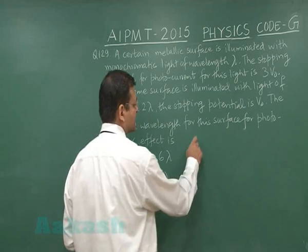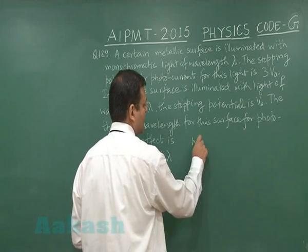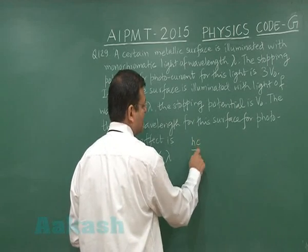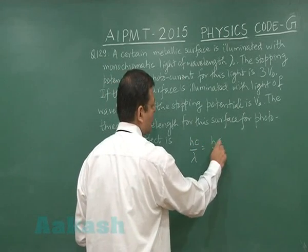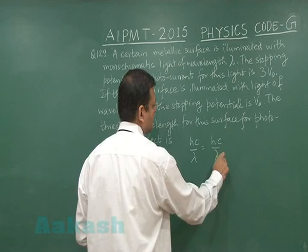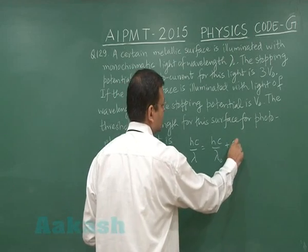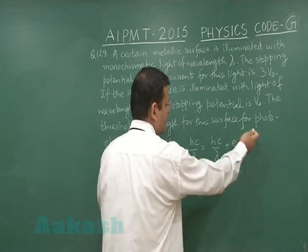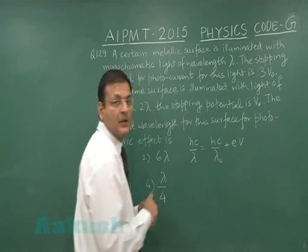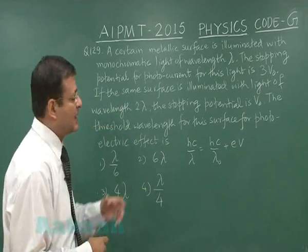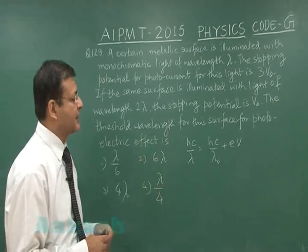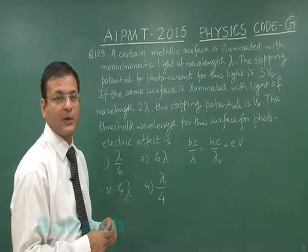Using Einstein's expression: HC/λ equals HC/λ₀ plus e times the stopping potential. You need to make two equations and then find the required quantity.